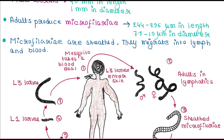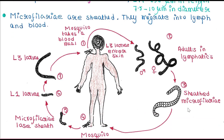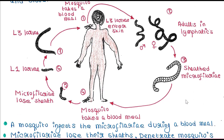These adults produce microfilariae. Microfilariae are 244 to 296 micrometers in length and 7.5 to 10 micrometers in diameter. Microfilariae are sheathed — they have an outer covering or sheath — and they migrate into the lymph and blood of the person.